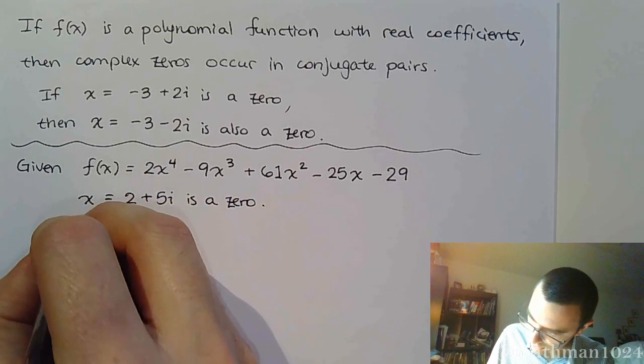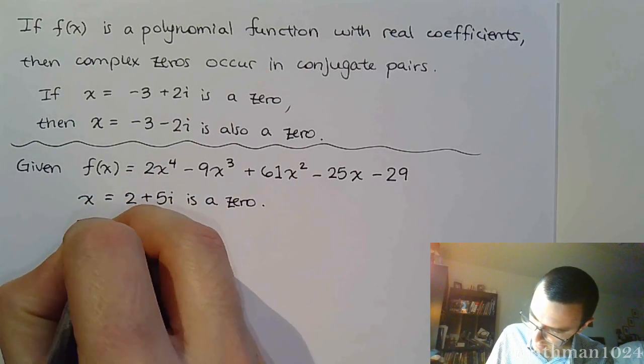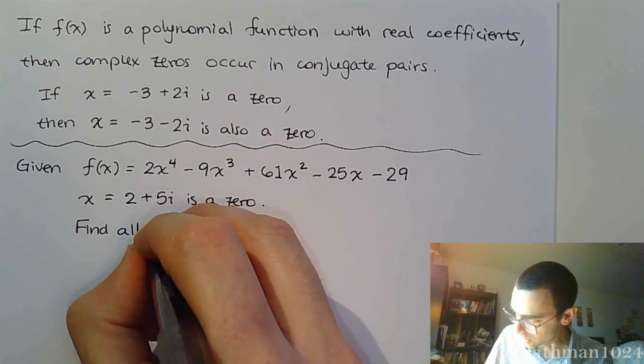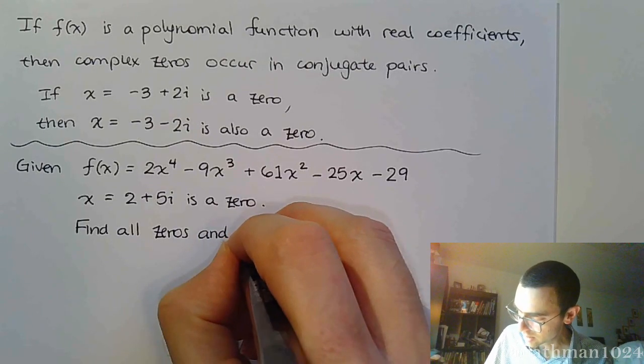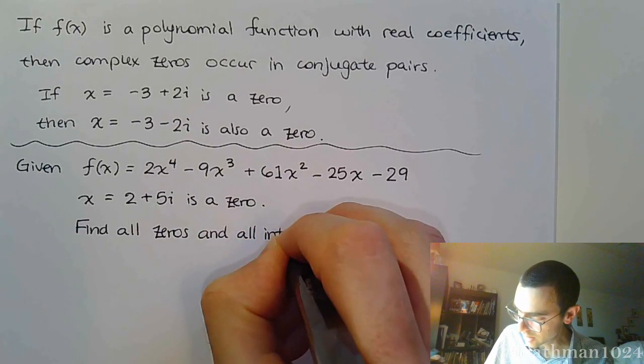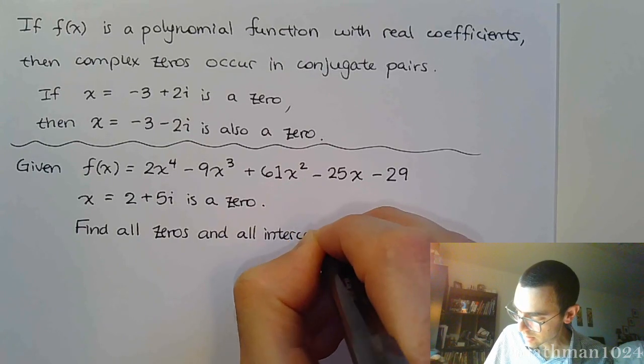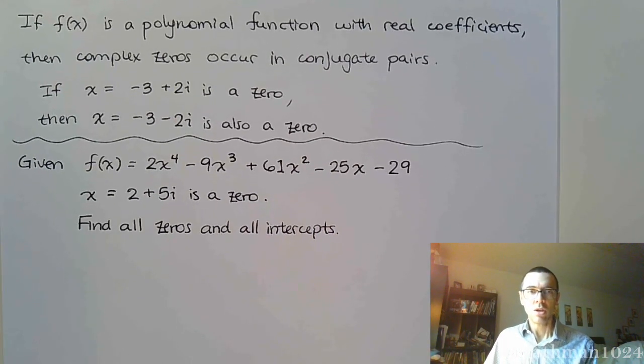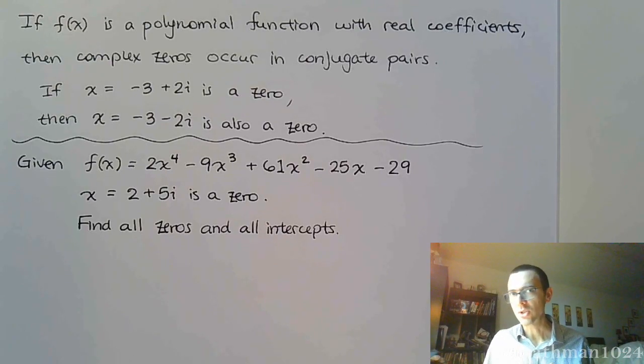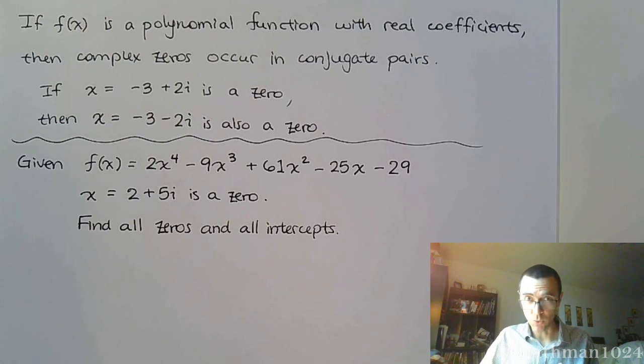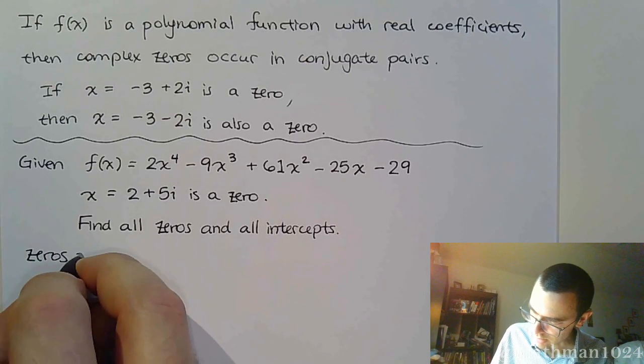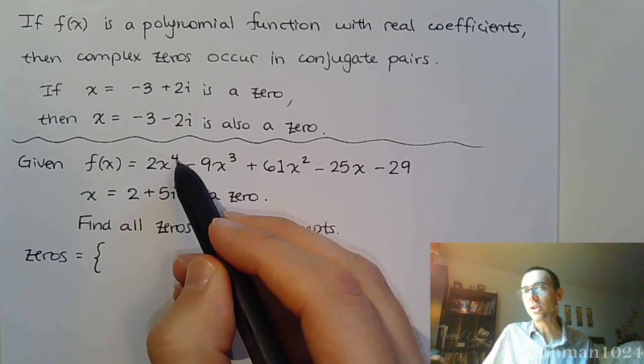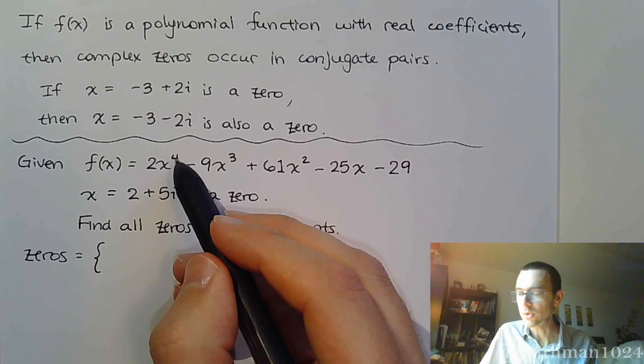And I want you to do this: I want you to find all zeros and all intercepts. Alright. So, my suggestion, if you see something like this on the test, is to go ahead and start putting information down that you know. For example, you know this. In terms of the zeros, because the degree is 4, we're supposed to have 4 zeros. I gave you 1.